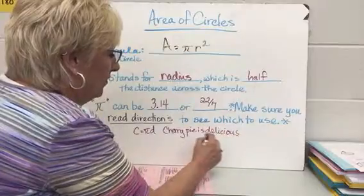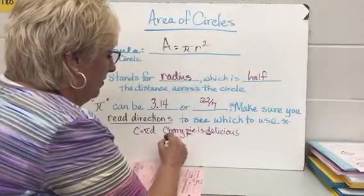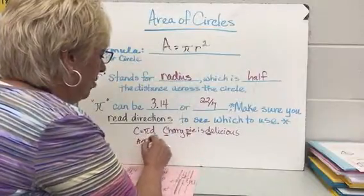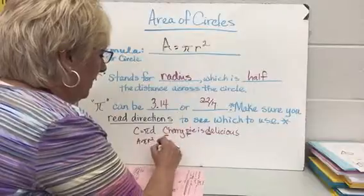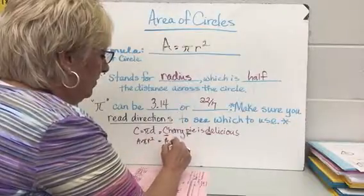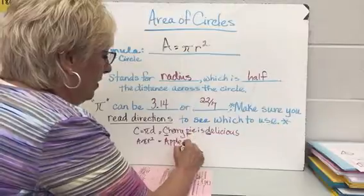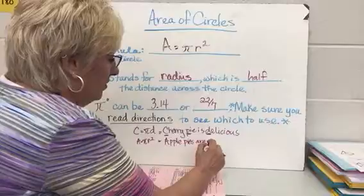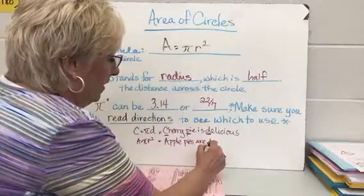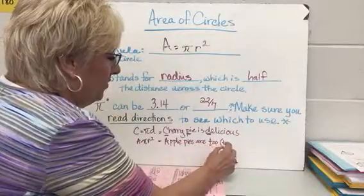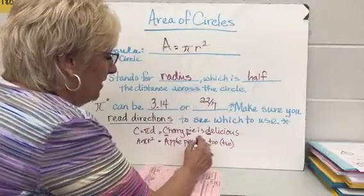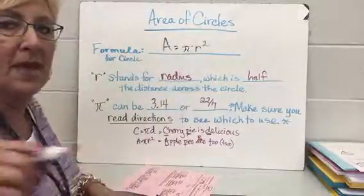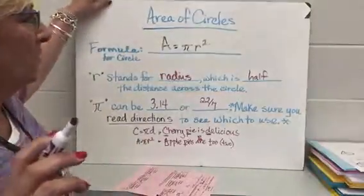You can write this somewhere on your form: 'apple pies are two' — that's the area formula A = πr². Just remember those two mnemonics.